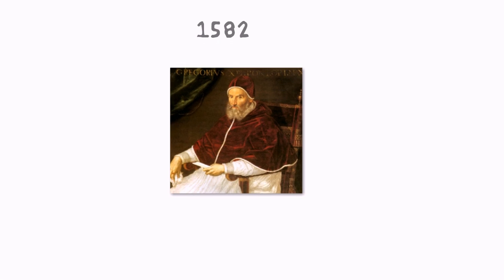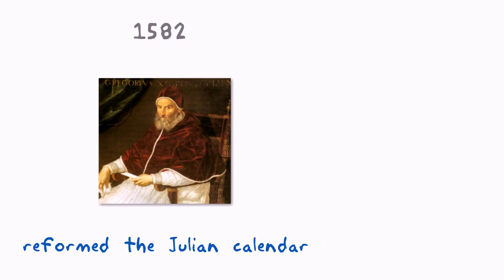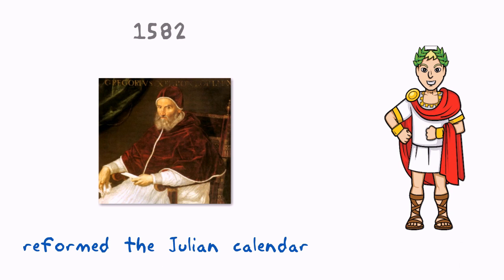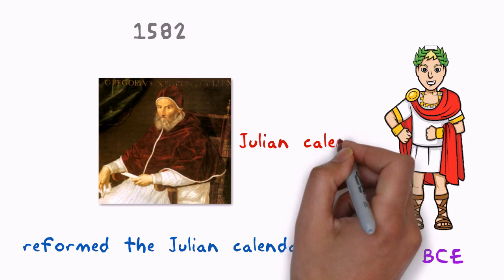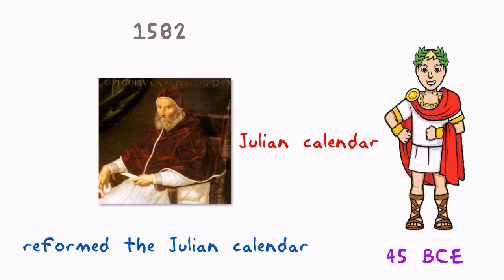In 1582, Pope Gregory XIII reformed the Julian calendar, which was introduced by Julius Caesar in 45 BCE. By Pope Gregory's time, the calendar had drifted 14 days off track.